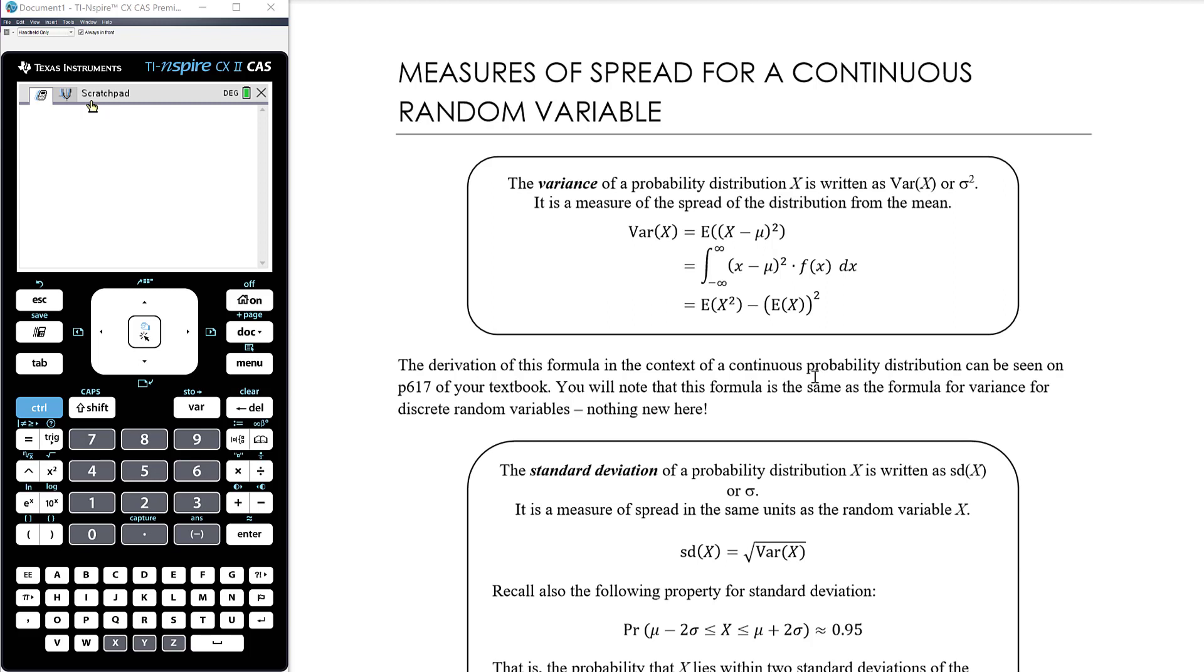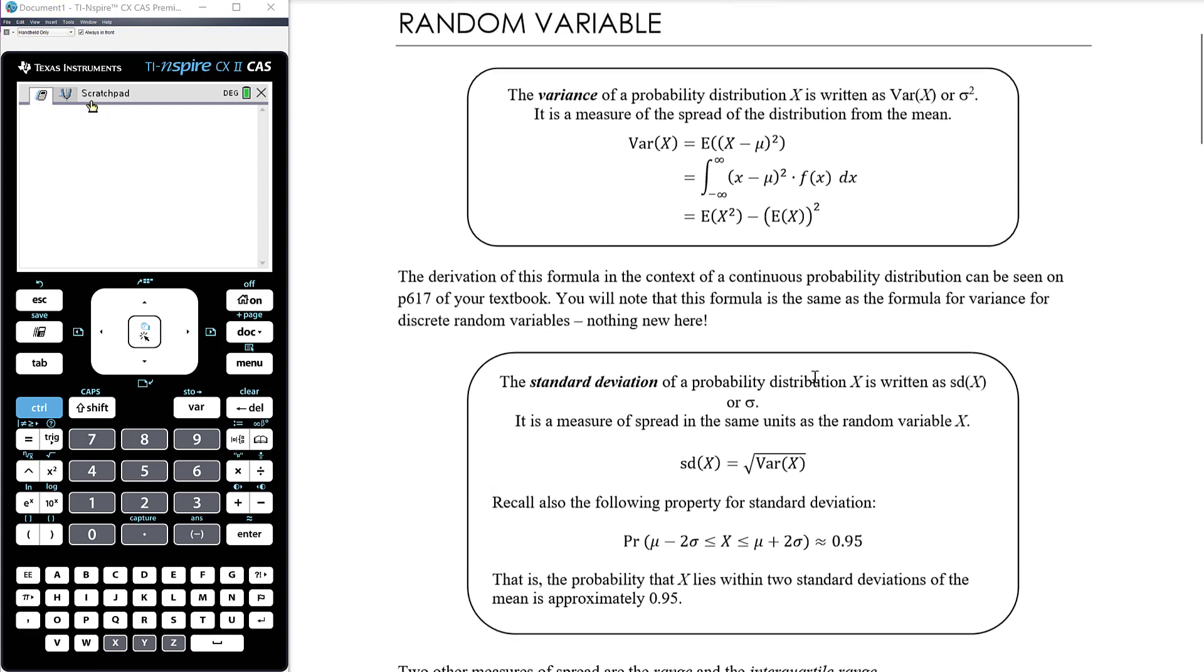So variance, as we know, is the average of the squared distances from the mean. Technically speaking, that's what's happening. However, we tend to use this. We could calculate it for a continuous random variable by integrating over the domain x minus the mean all squared times f of x. But actually remember we have our computational formula which we derived back when we looked at measures of spread for discrete random variables. Derivation of this formula in the context of a continuous probability distribution can be seen in your textbook, but we did the derivation ourselves when we looked at discrete random variables. So there's nothing new here. Standard deviation is the square root of the variance. Notation is all the same here.